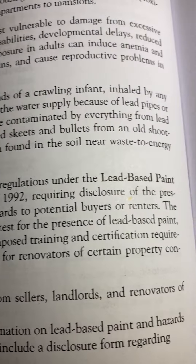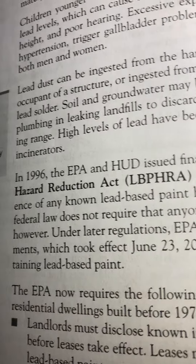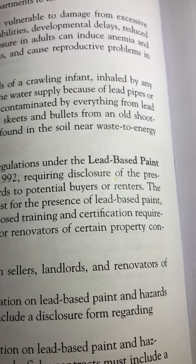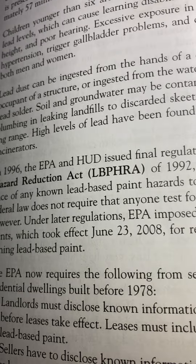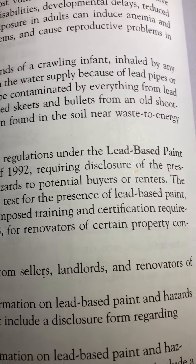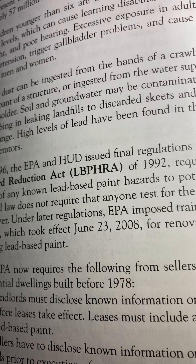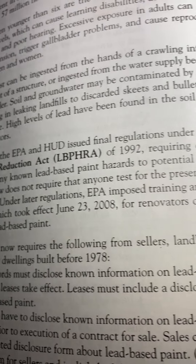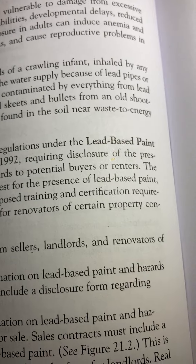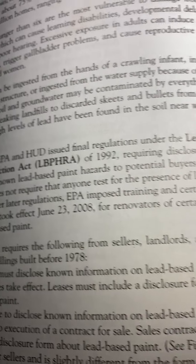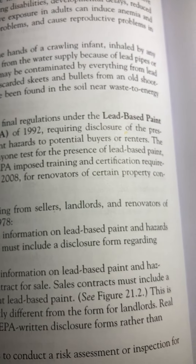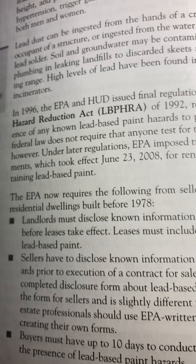In 1996, the EPA and HUD issued final regulations under the Lead-Based Paint Hazard Reduction Act (LBPHRA) of 1992, requiring disclosure of the presence of any known lead-based paint hazards to potential buyers or renters. The federal law does not require that anyone test for the presence of lead-based paint. However, under later regulations, EPA imposed training and certification requirements, which took effect June 23, 2008, for renovators of certain property containing lead-based paint. The EPA now requires the following from sellers, landlords, and renovators of residential dwellings built before 1978.